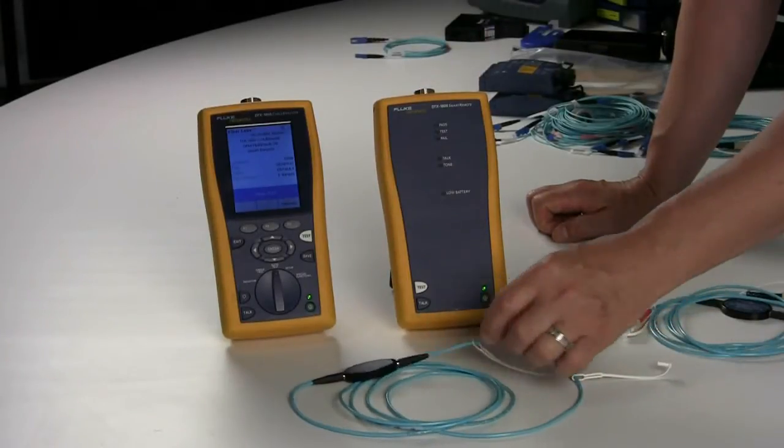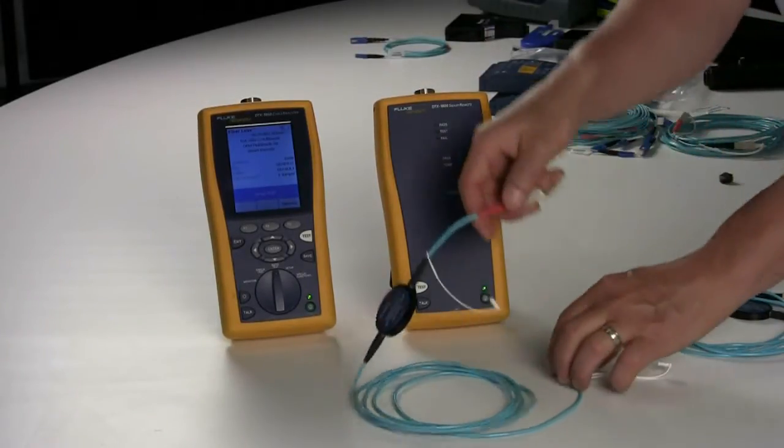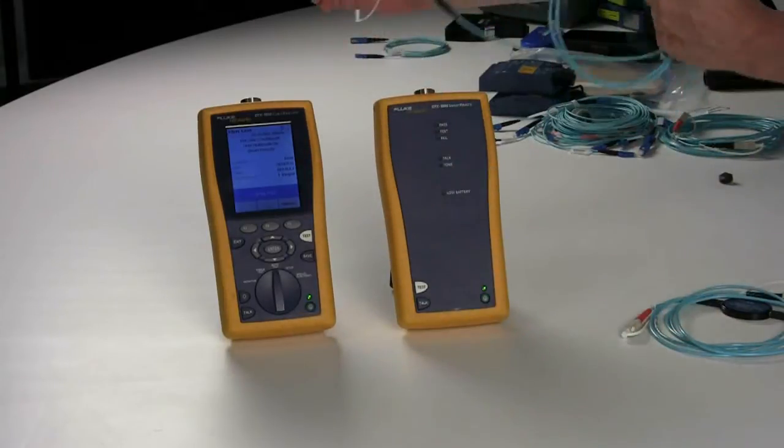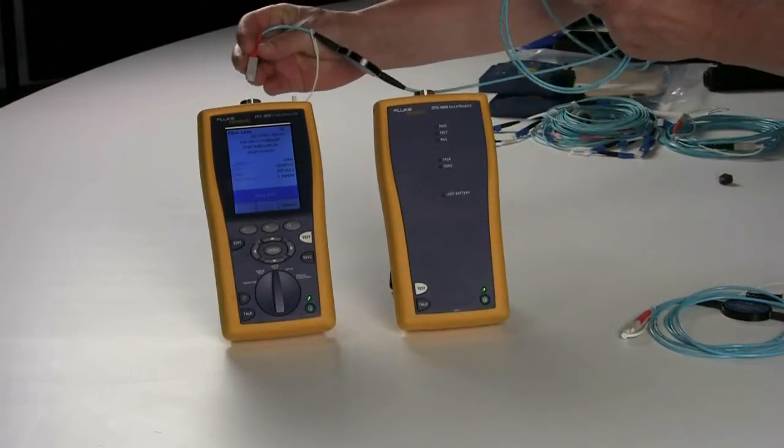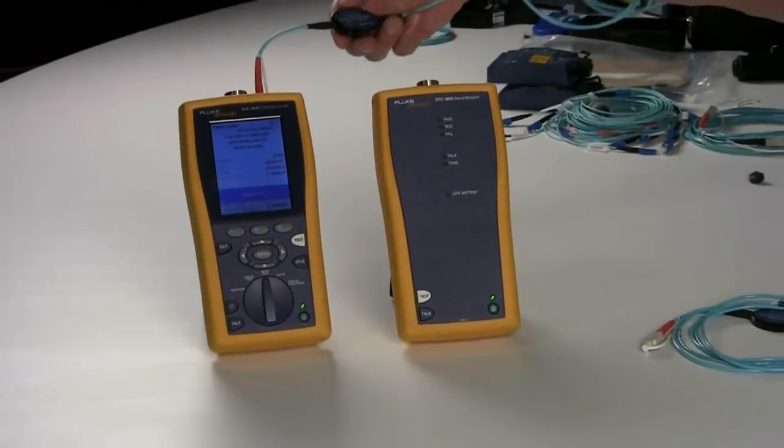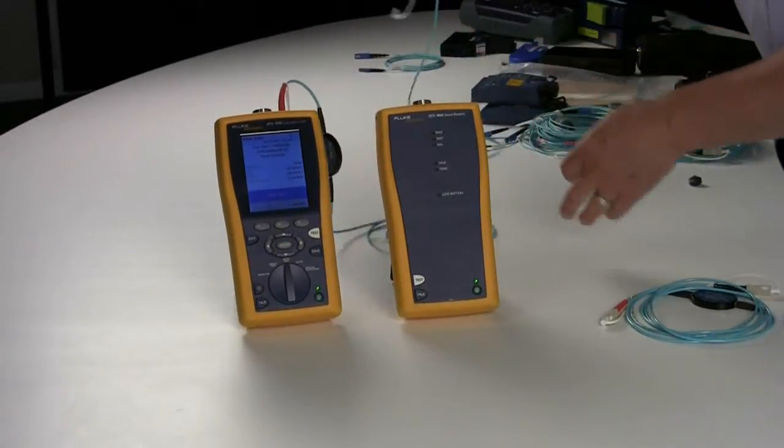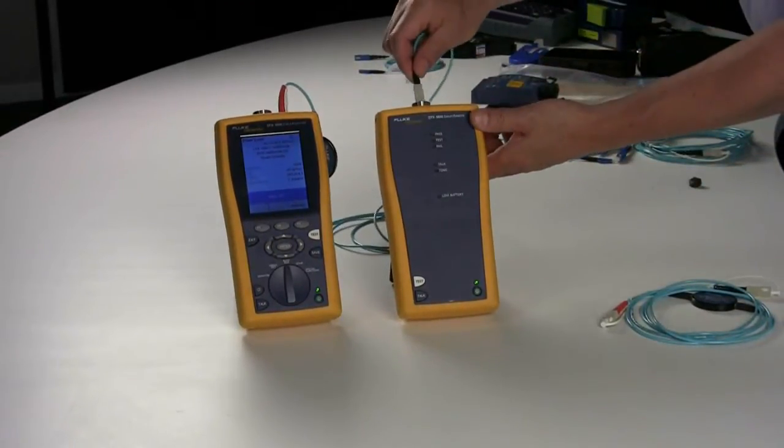In order to set reference, we're going to utilize TIA method B, which is one jumper. For this, you will place the transmit with the EF compliance cord and the transmit, and the other end on the receive.